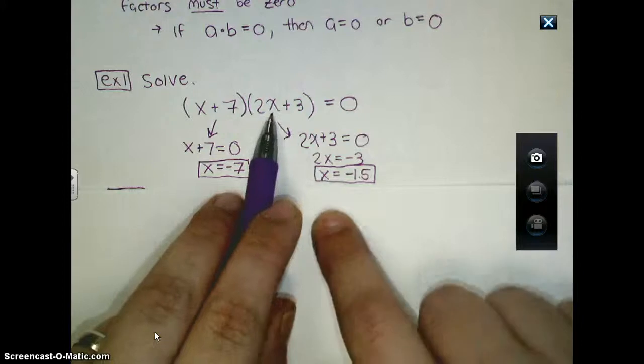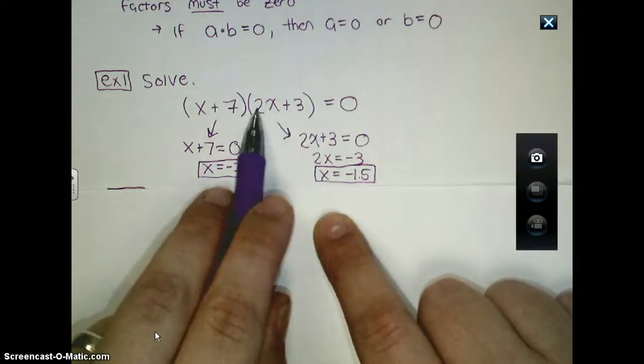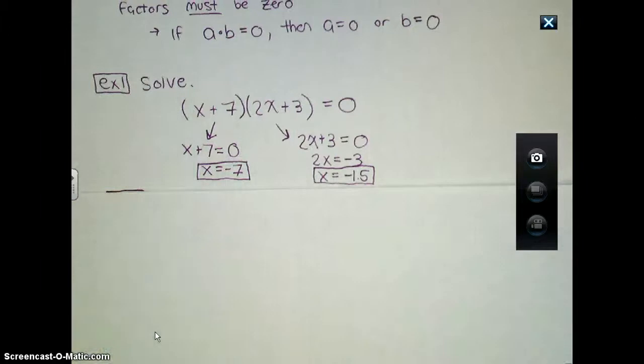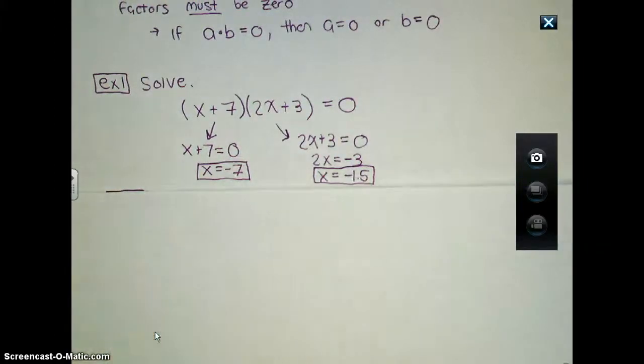In this example, if this is negative 1.5 and I multiply by two and add three to it, that's going to be zero, thus making this equation equal to zero. These two answers are the possibilities here.